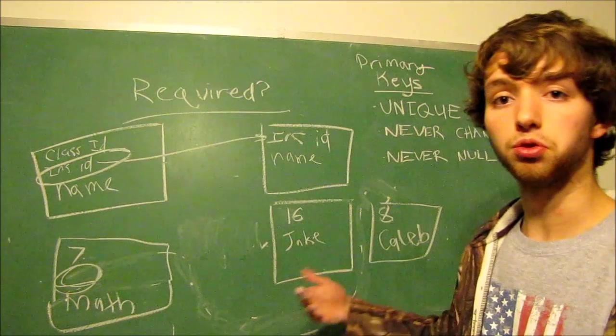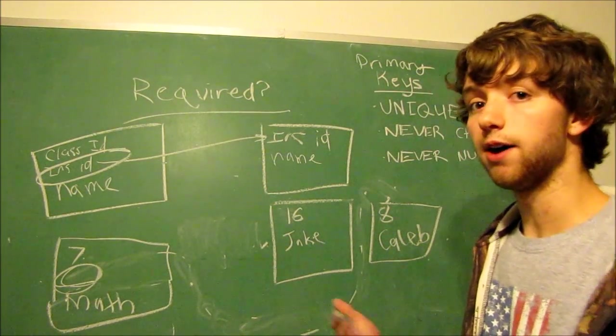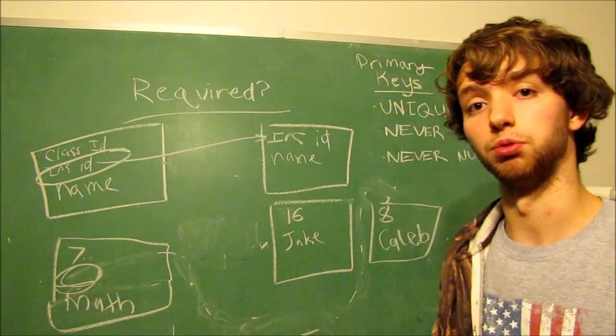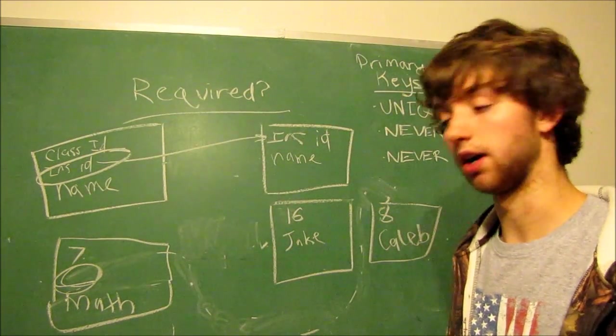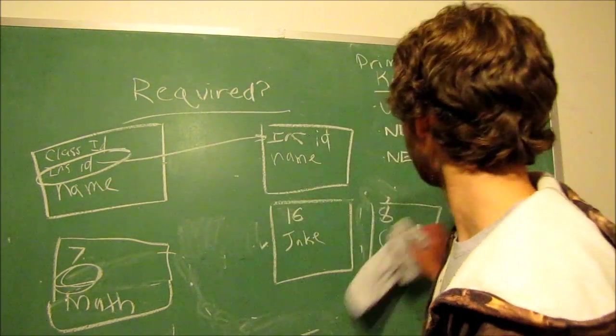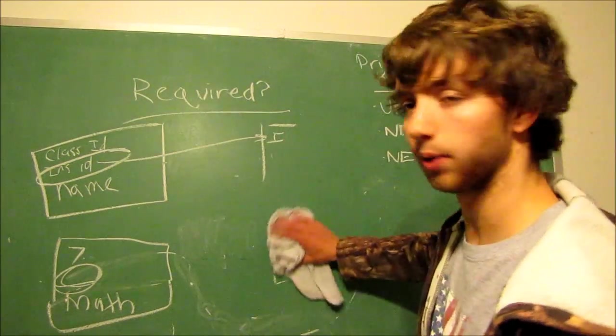Other examples, having not null would be a good idea because it forces that relationship to be there.